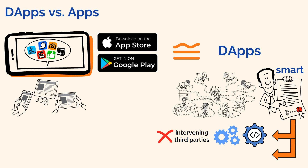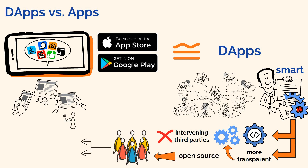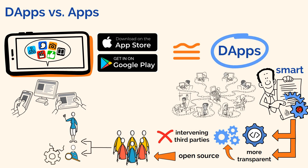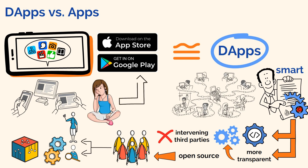Secondly, dApps are way more transparent in how they operate. Because dApps run on smart contracts, they are essentially open source, meaning that everyone can view exactly what they are supposed to do. It means you can find out precisely how a dApp works, the conditions needed to operate it, and so forth. Sadly, this is not the same kind of experience you get with a traditional centralized app.